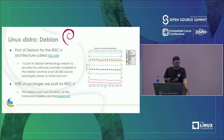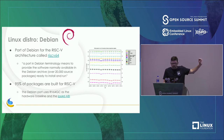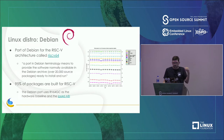Debian also has pretty good support for RISC-V. Debian has more than 20,000 packages. The graph shows RISC-V as the top line — over 95% of packages are being built for RISC-V, which is pretty encouraging.